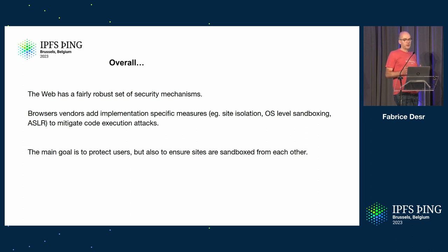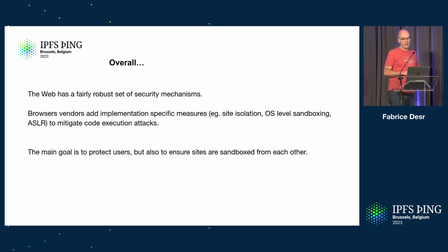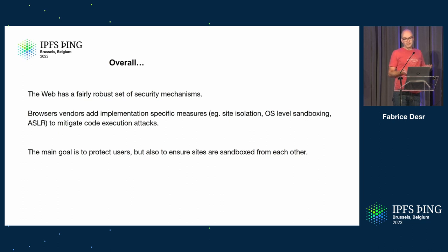Browsers also use different processes for code that's more subject to attacks. Media decoding typically happens in a separate process because media decoders have a fairly high attack surface. GPU code is similarly isolated now. All that is to make sure you can run untrusted code safely — good for users and ensures sites are sandboxed from each other. But that doesn't tell us anything about how a given site protects their own users, because that part is mostly privacy, not security.